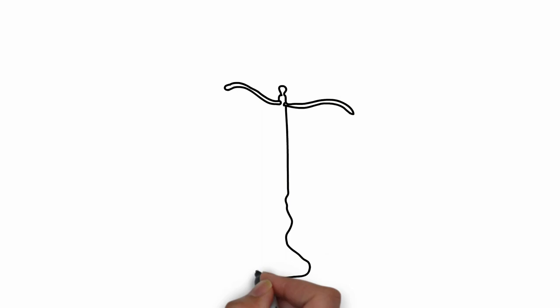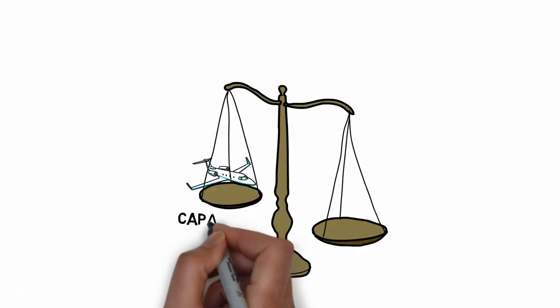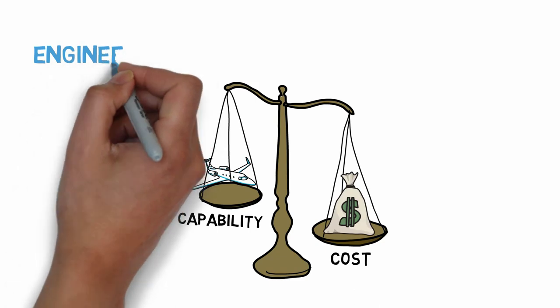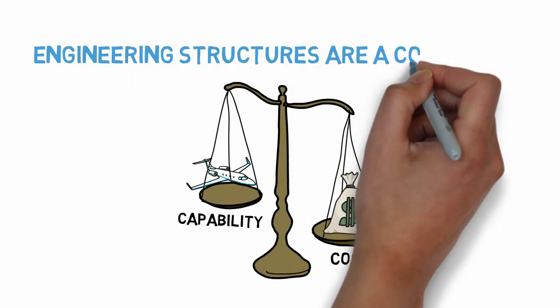So we have to make some decisions. We have to trade off structural capability in order to fit within the design constraints such as weight and cost. In essence, all engineering structures, including aircraft and spacecraft, are a compromise.